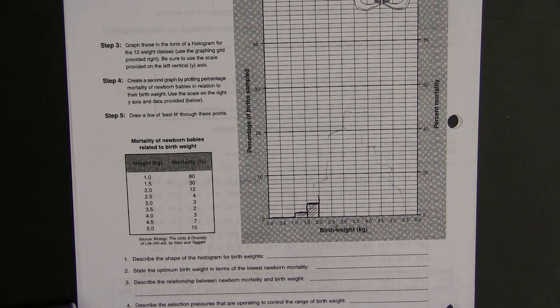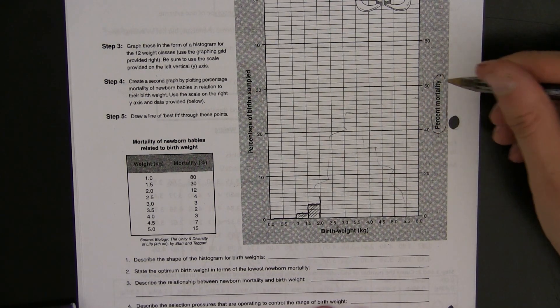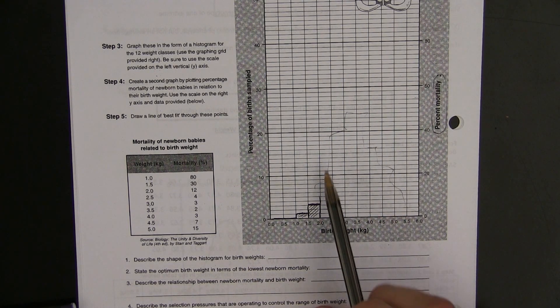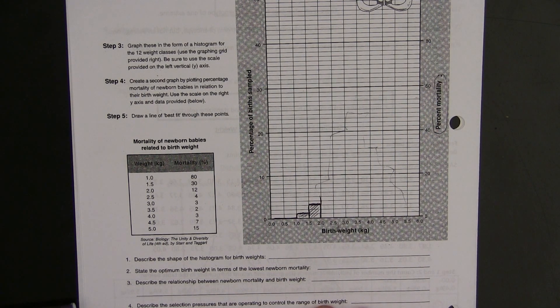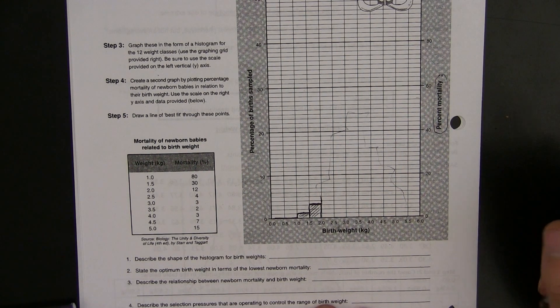Next, and this is the part that a lot of students get wrong, you're going to plot the percentage mortality. As I said, first thing was to count the number of babies in each category, then plot the data as a bar chart on here, or frequency histogram. Then finally, you need to plot the percentage mortality. Now, that data is available in this table here.